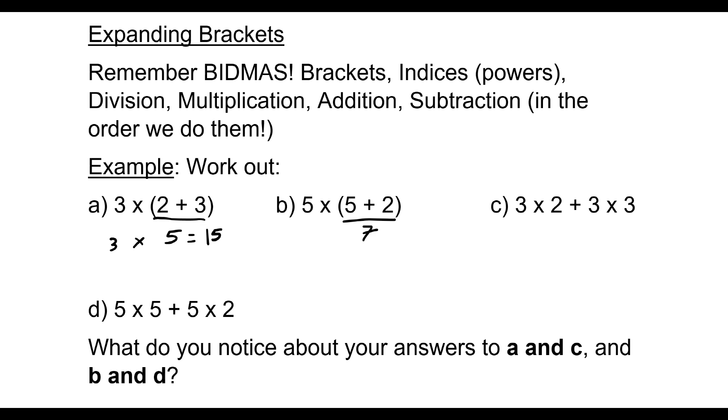Secondly, 5 plus 2 is 7. 5 multiplied by 7 is 35, so my second answer is 35.